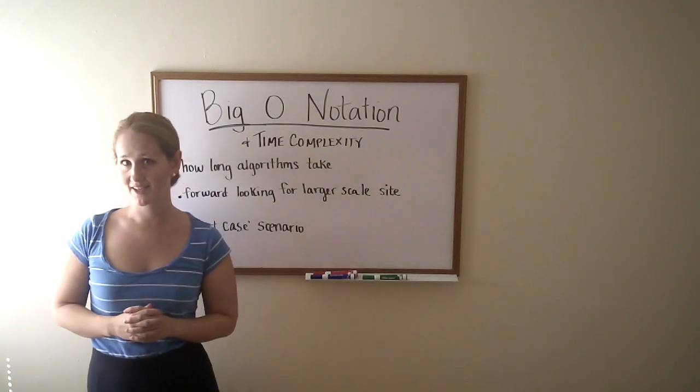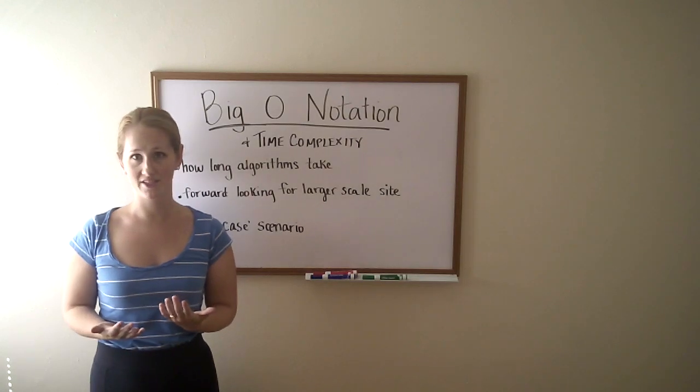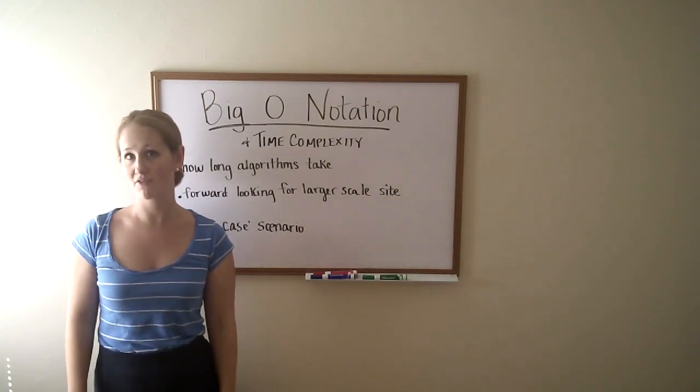Big O notation and time complexity are ways of discussing how long an algorithm is going to take so that you can streamline your software or your web app.